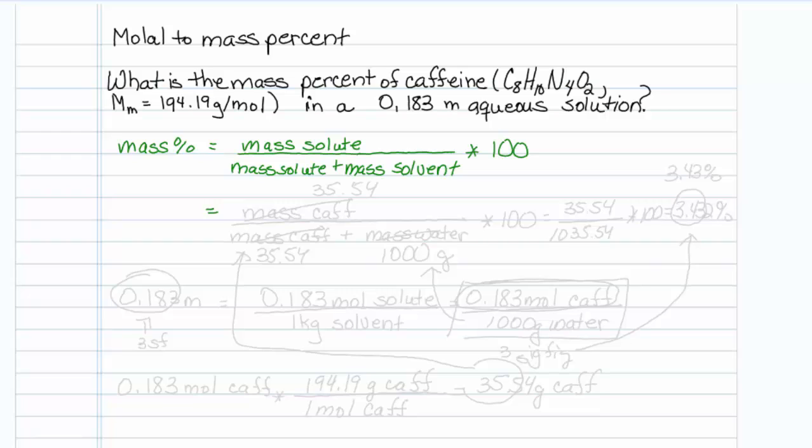Our solute is our caffeine. So this means we need the mass of caffeine over the mass of caffeine plus the mass of water times 100. What are we given here? We're given that we have 0.183 molal of material, this solution. If we remember what molal is,